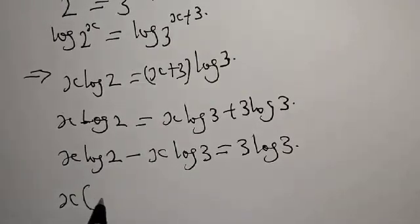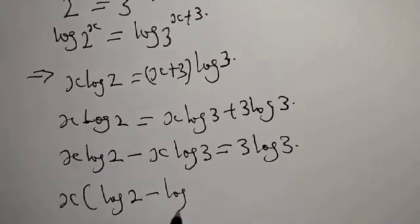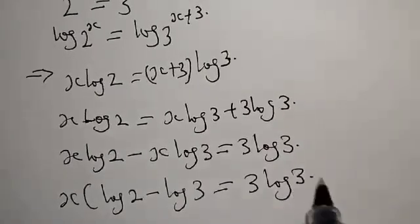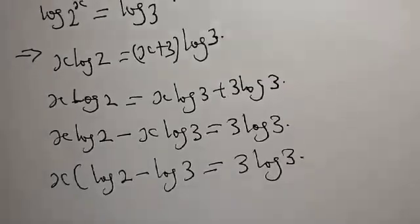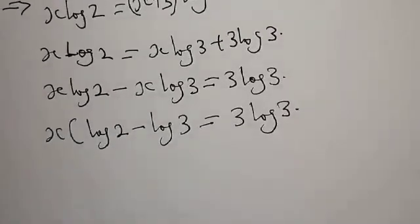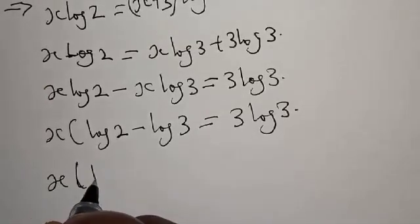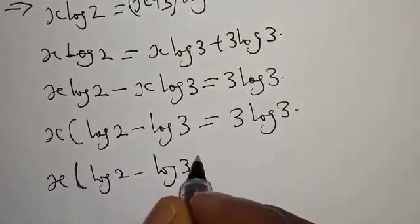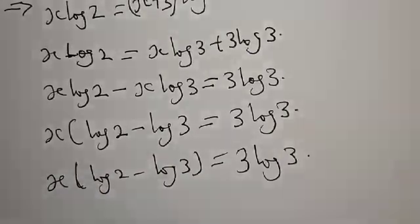x log 2 minus x log 3 equals 3 log 3. This can be written as x into log 2 minus log 3 equals 3 log 3.